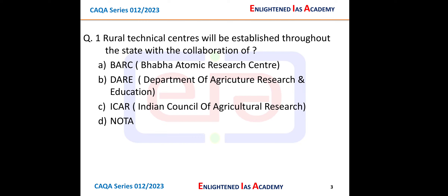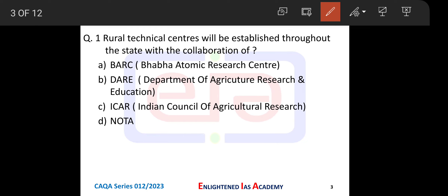Rural Technical Centers will be established throughout the state in collaboration with RIPA. These Rural Technical Centers are being opened by the Chhattisgarh government — but in collaboration with whom? Option A: Bhabha Atomic Research Center (BARC). Option B: Department of Agriculture Research and Education. Option C: Indian Council of Agricultural Research. Option D: None of the above. Our answer is Option A — Bhabha Atomic Research Center (BARC).